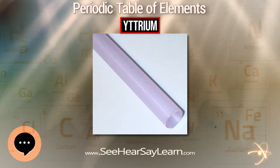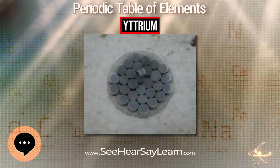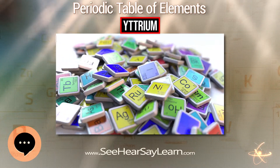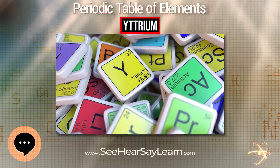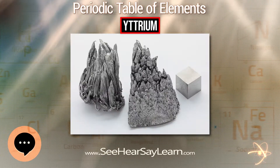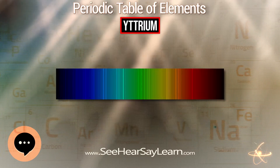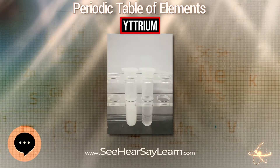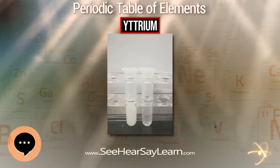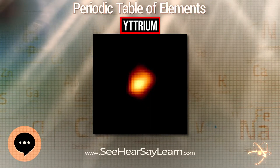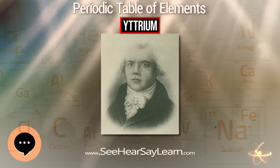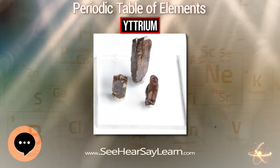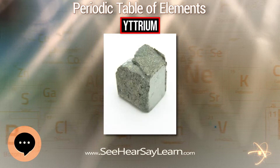In the decades after Antoine Lavoisier developed the first modern definition of chemical elements, it was believed that earths could be reduced to their elements, meaning the discovery of a new earth was equivalent to the discovery of the element within — in this case, yttrium. In 1843, Carl Gustaf Mosander found that samples of yttria contained three oxides: white yttrium oxide, yellow terbium oxide, and rose-colored erbium oxide. A fourth oxide, ytterbium oxide, was isolated in 1878 by Jean Charles Galissard de Marignac. New elements were later isolated from each of those oxides and named in some fashion after Ytterby.